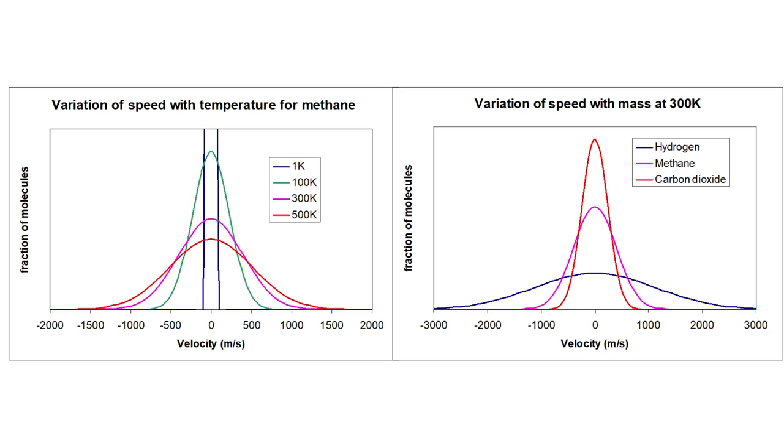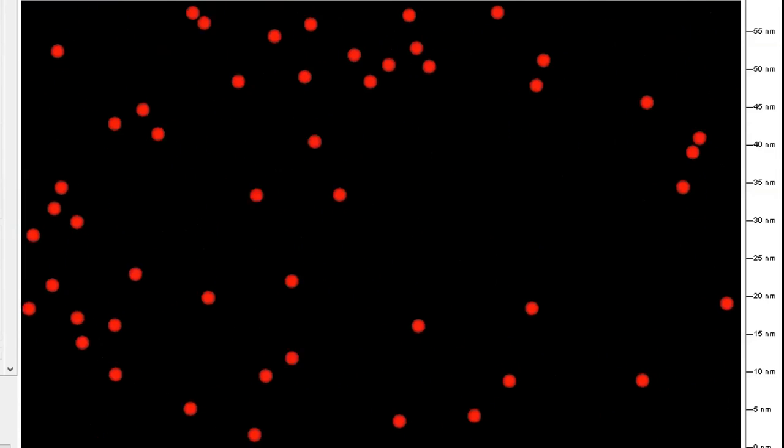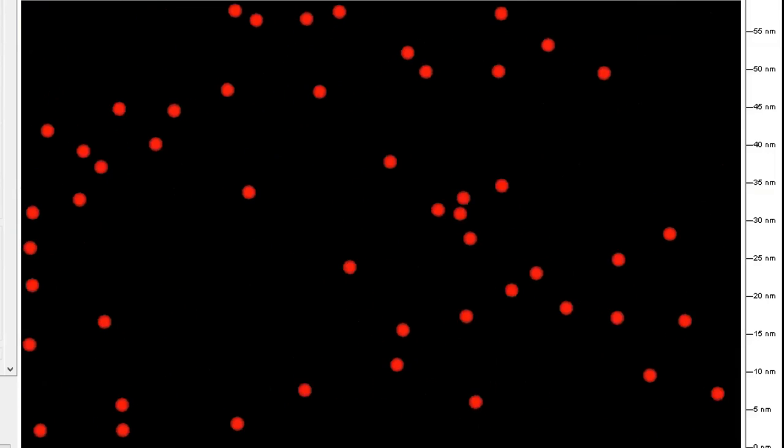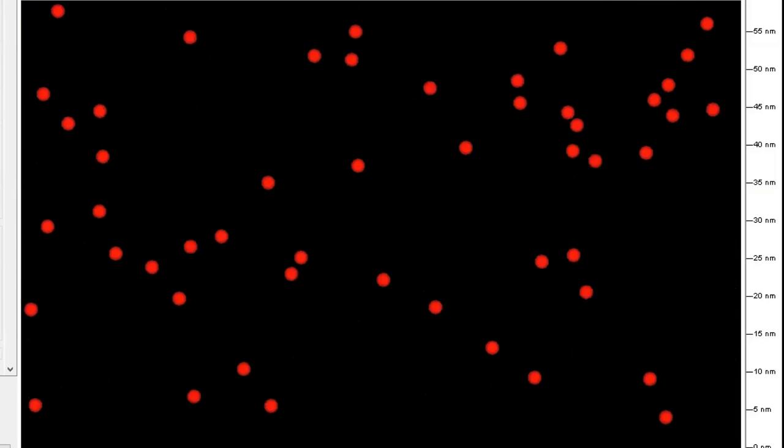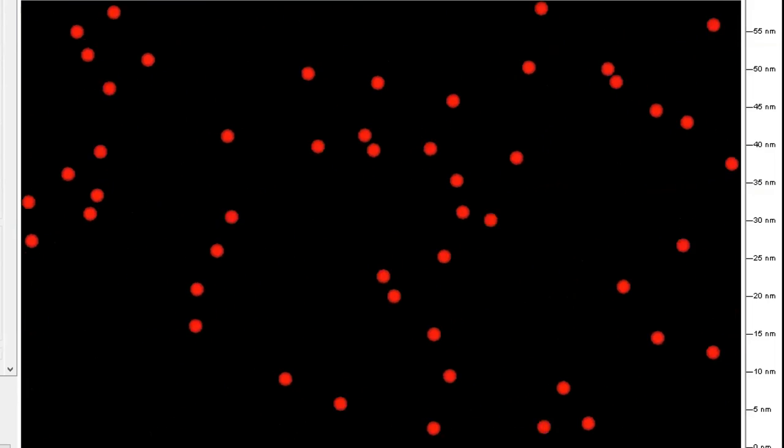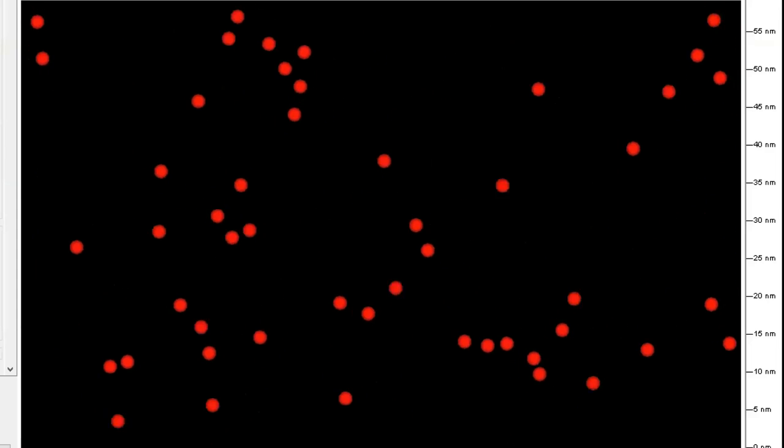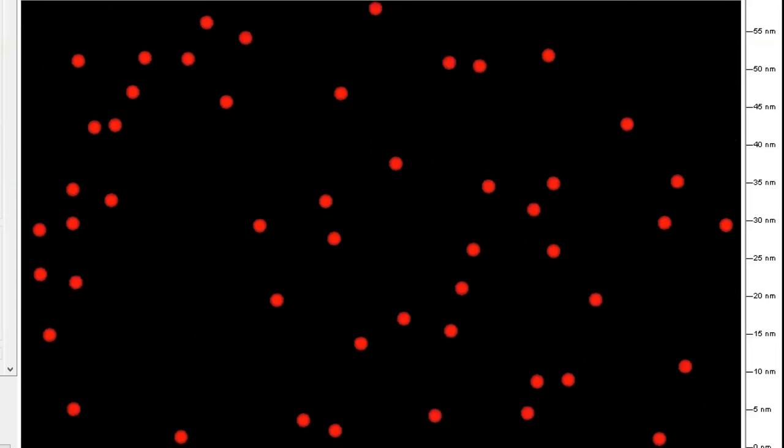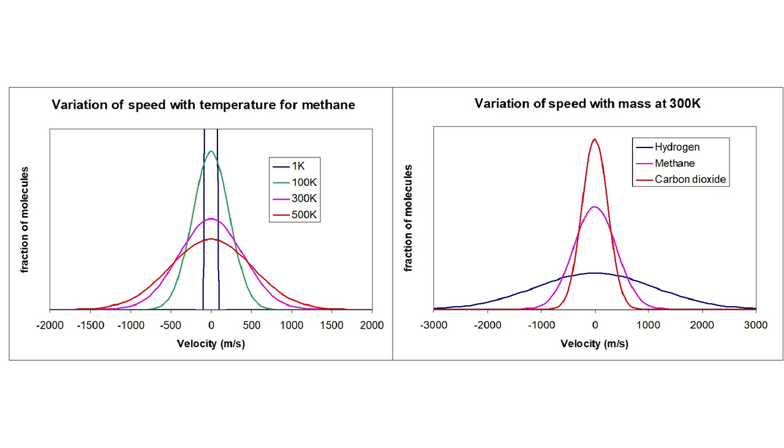Notice that all the curves have their maxima at zero meters per second. In a way, that makes sense, because there should be just as many molecules moving in the positive x direction as in the negative x direction, so it's true that the average of those velocities would be zero. However, the molecules in a gas all move with a fairly high velocity in whatever direction they're headed. Almost none of them actually have a velocity of zero. That would mean that they're standing still, and molecules in a gas hardly ever do that at normal temperatures.